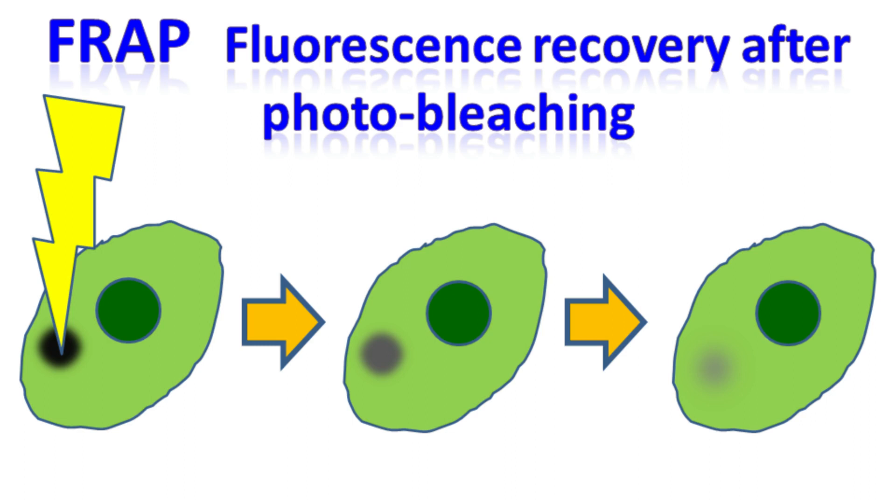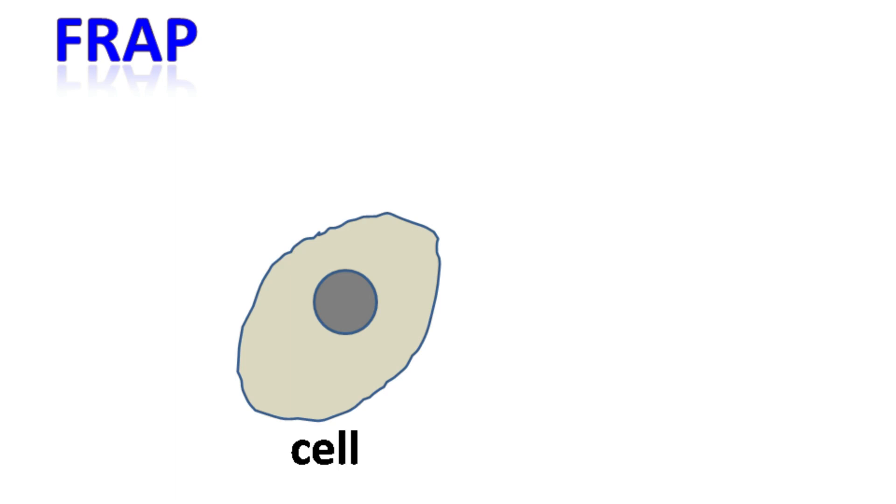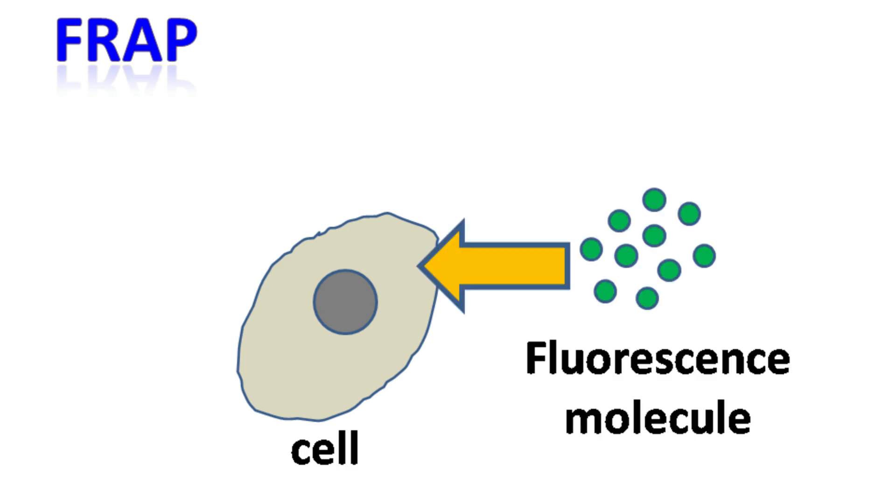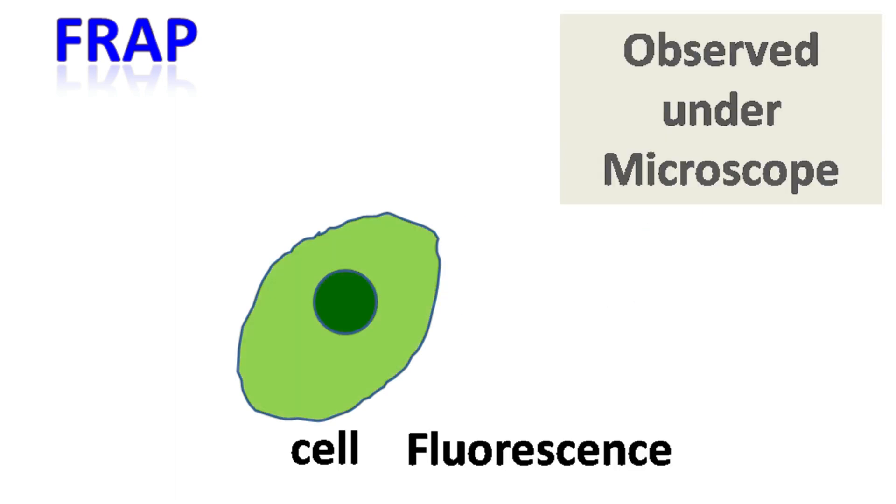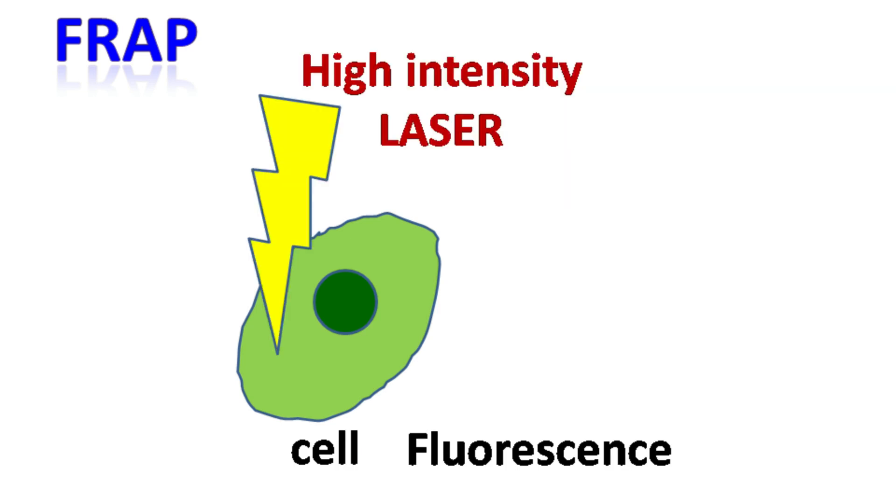Hey everyone, quick biochemistry basics here. Let's talk about Fluorescence Recovery After Photo-bleaching, or FRAP. When a cell is stained with fluorescent molecules and observed under the microscope, the cell gives fluorescence. Now, in FRAP, a high-intensity laser is incident on a small region of the cell which is giving fluorescence.